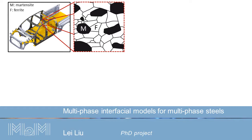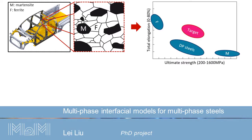The combination of these two distinguished phases leads to an excellent combination of ductility and strength for dual-phase steels. Of course, we are always looking for things better. However, there is a big challenge on further improving DP steel properties.